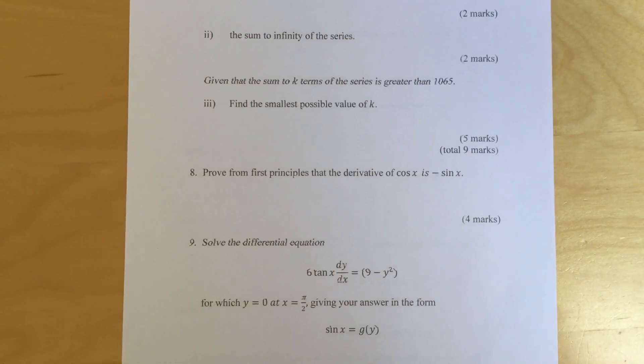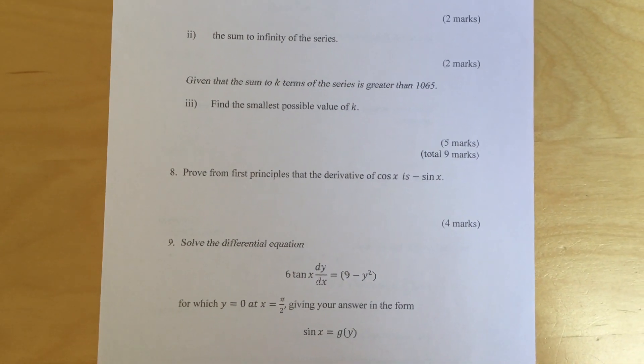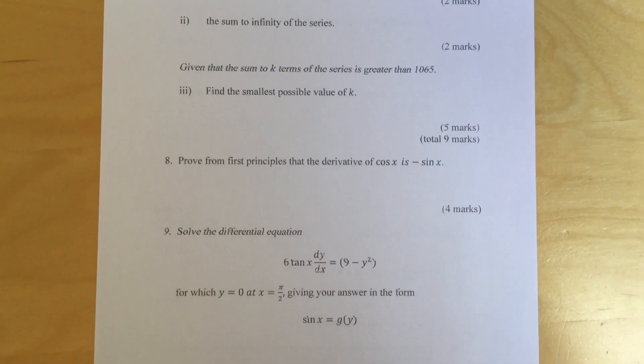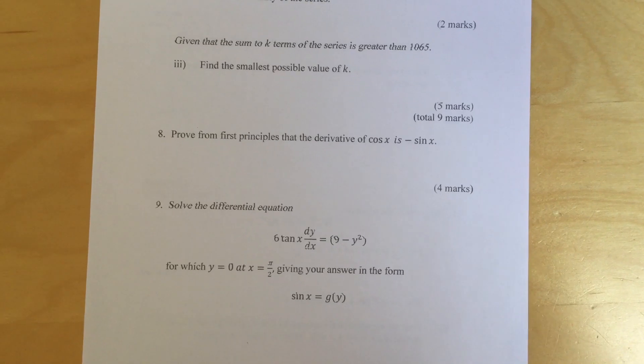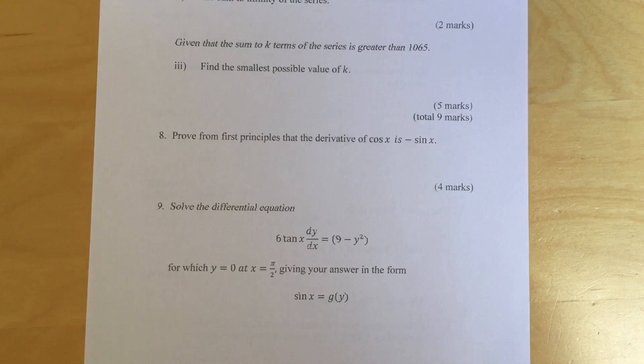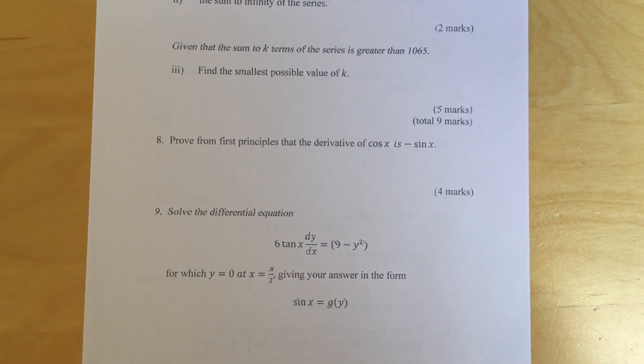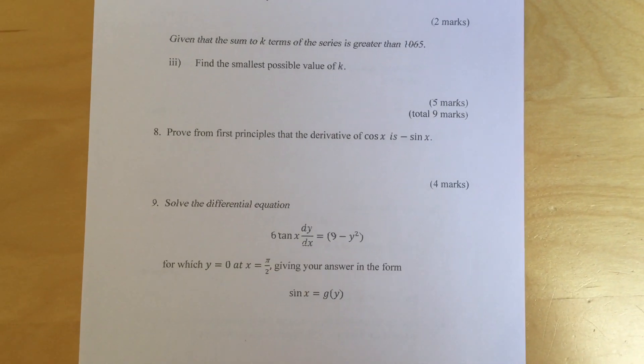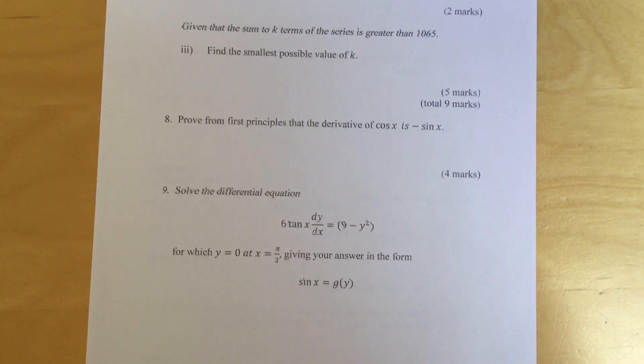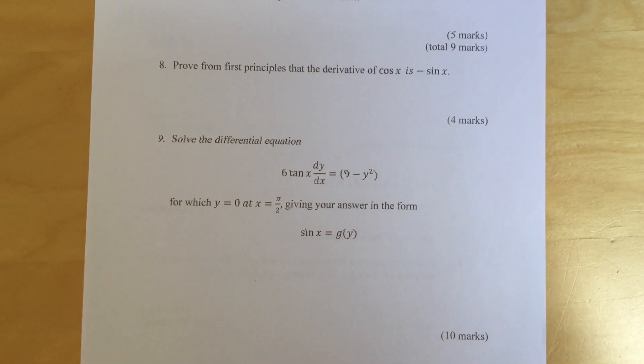Question 8: Prove from first principles that the derivative of cos x is minus sin x. Question 9: Solve the differential equation 6 tan dy dx equals 9 minus y squared, for which y equals 0 at x equals pi over 2, giving you an answer in the form sin x equals g of y.